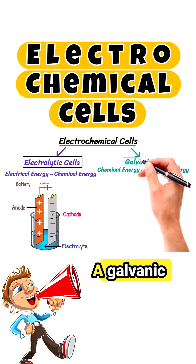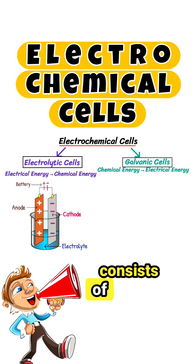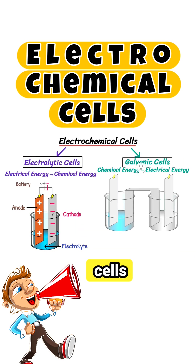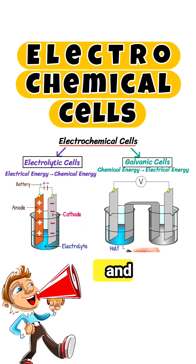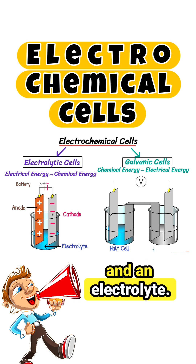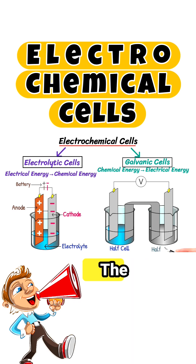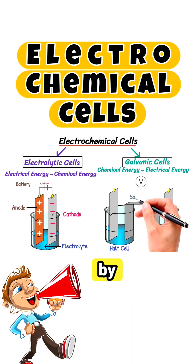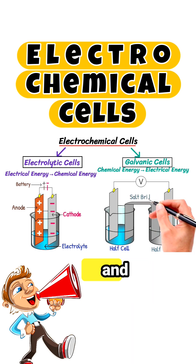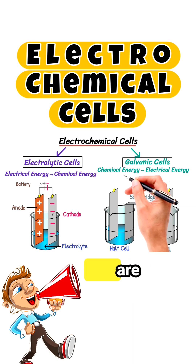A galvanic cell consists of two half cells, each containing an electrode and an electrolyte. The two half cells are connected by a salt bridge and the electrodes are connected by a wire, allowing electrons to flow.